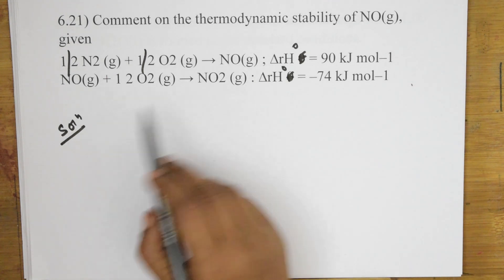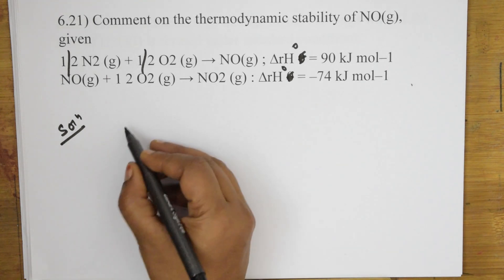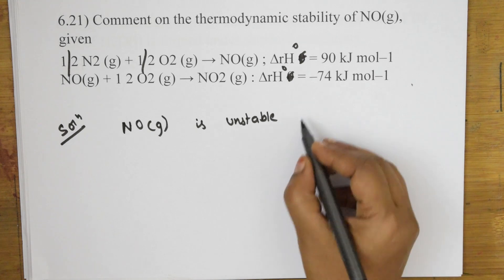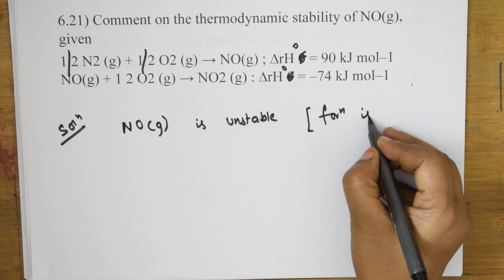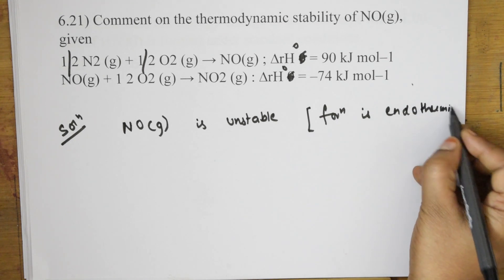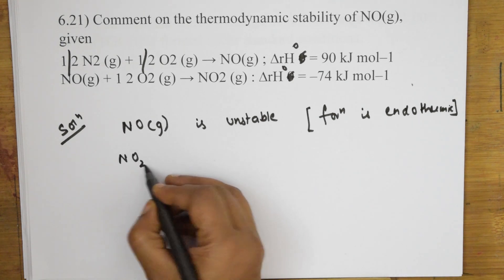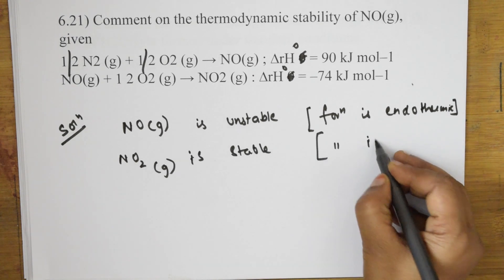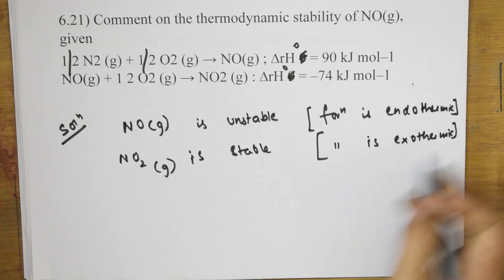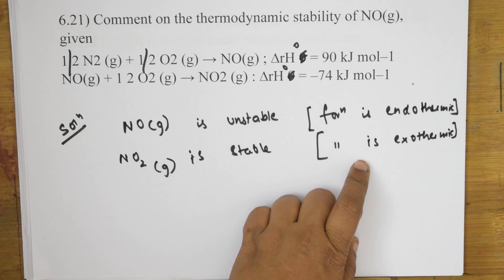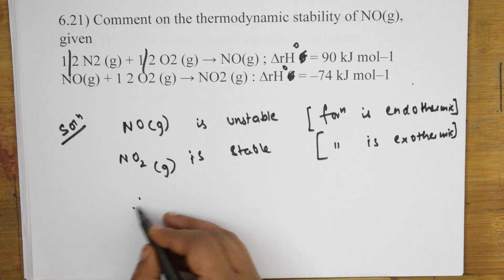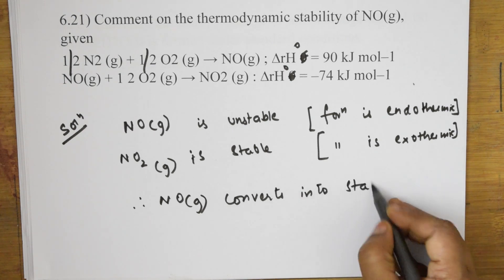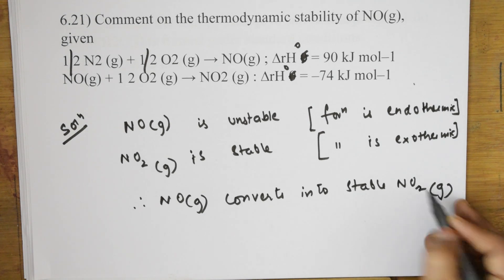That is why it gets converted to NO2 gas. So, how should you write your answer? You should write NO gas is unstable. Why? Because the formation is endothermic. NO2 gas is stable. The formation here is exothermic. So, this is more disorderless. This is less. So, what should you say? Therefore, NO gas converts into stable NO2 gas. That's it. This is how we are going to write.